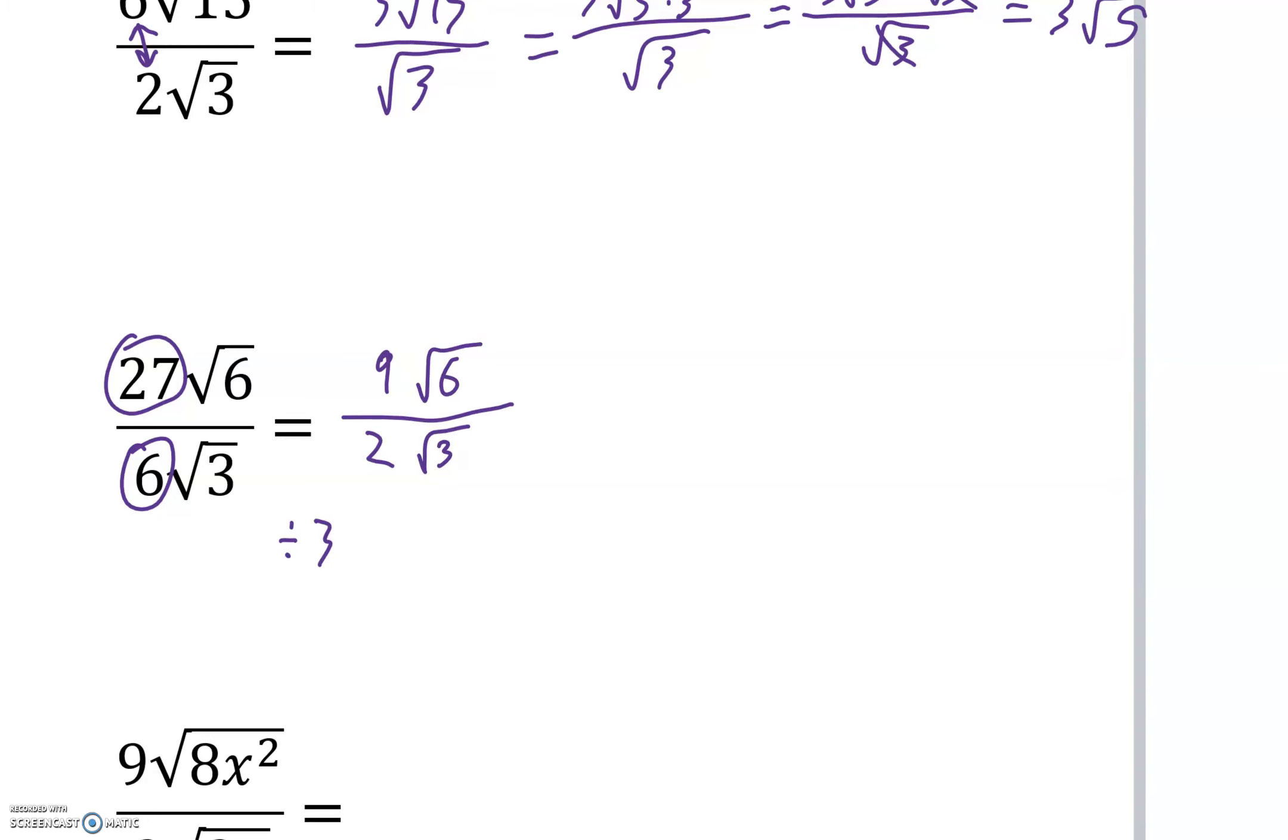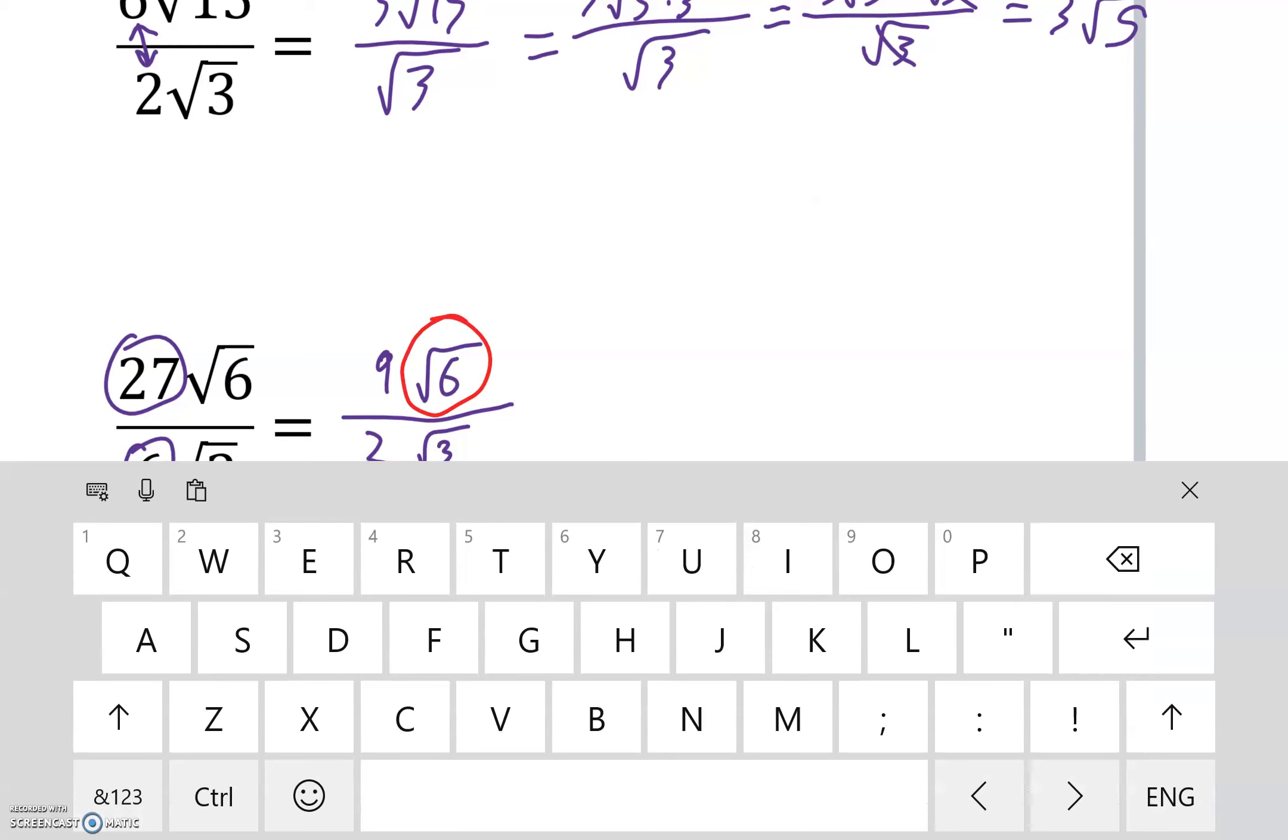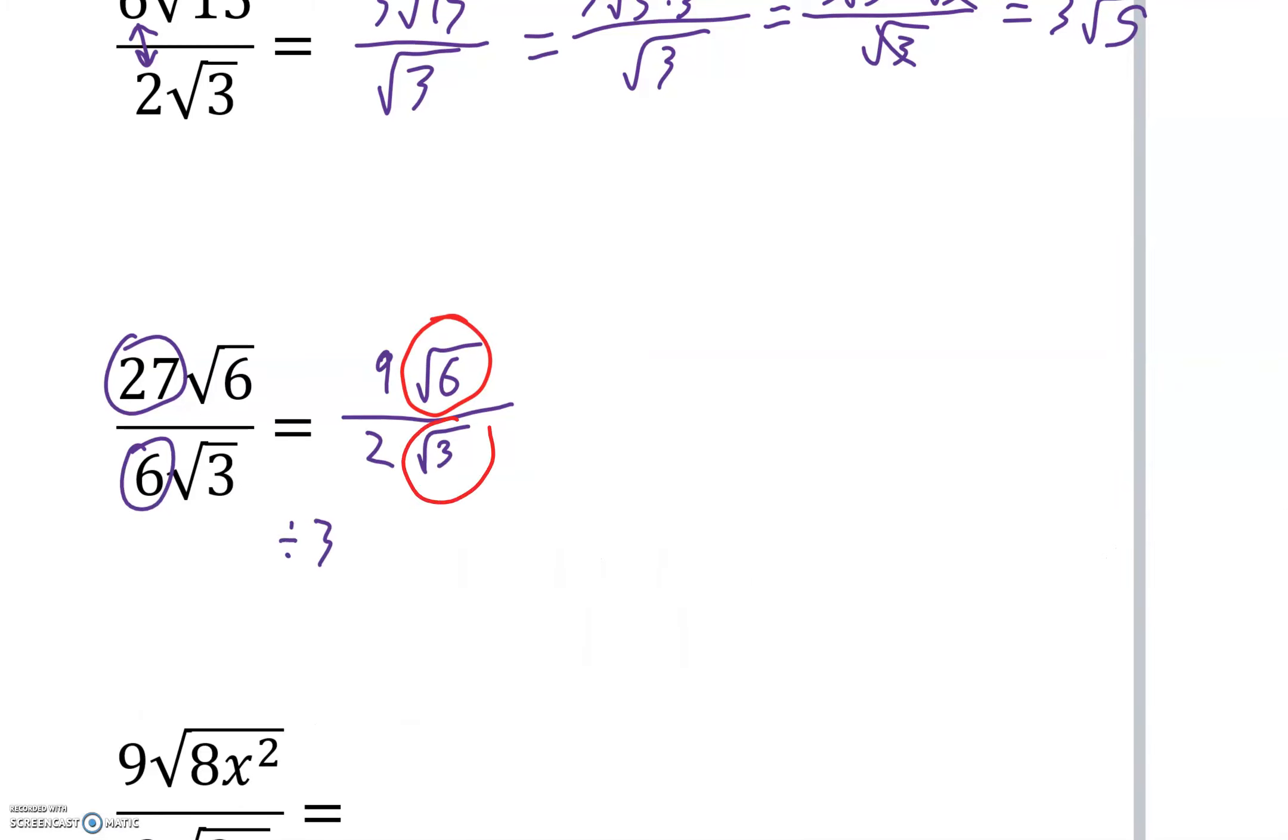Now we can look at our next step, which is looking at the radicals, divide the top and bottom. It looks like dividing by root 3 again. So divide by root 3, and now we get 9 over 2, but we have root 2 over root 1 or nothing. We can just leave it like that: 9 root 2 over 2.